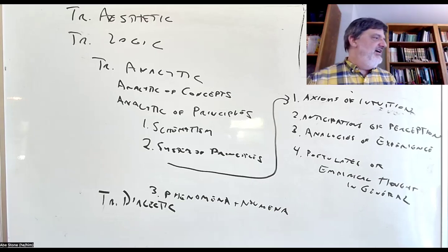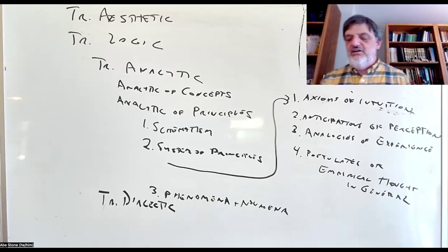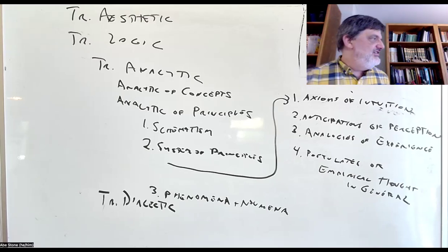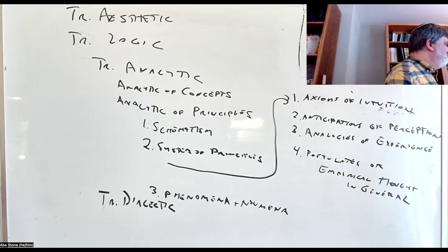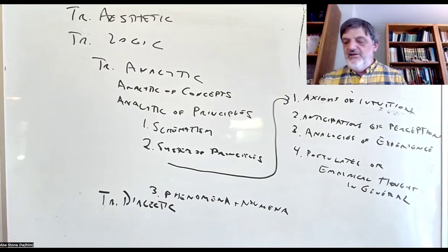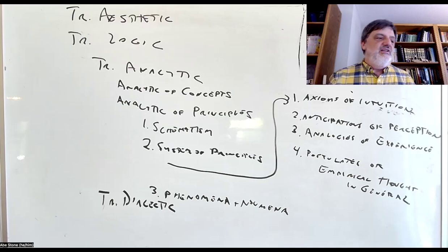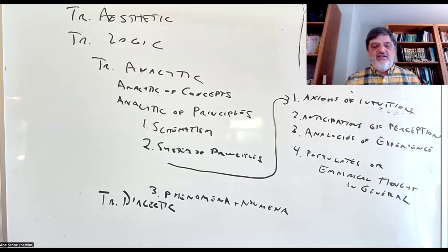I'll say something about why I chose to assign the second analogy in particular. But first, to remind you of how things are supposed to work: in the analytic of concepts, we showed that the manifold given in inner sense has to be, so to speak, an image of the categories. Using the language from the schematism, the transcendental imagination must be able to produce the manifold in inner sense as an image of the categories.